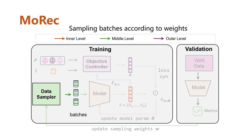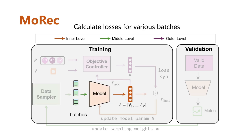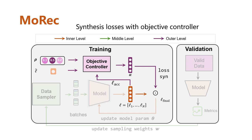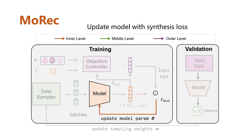Here is the framework of our method, called MOLREC. First, several batches are sampled according to sampling weights for various objectives. Then losses are calculated with those batches. Note that the losses vary due to batches, so the method is model-agnostic and does not require well-designed loss functions. To balance various objectives, we use a PID-based objective controller to get the coefficient alpha. Then the losses are synthesized to get the final loss.